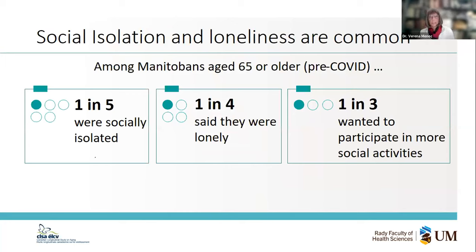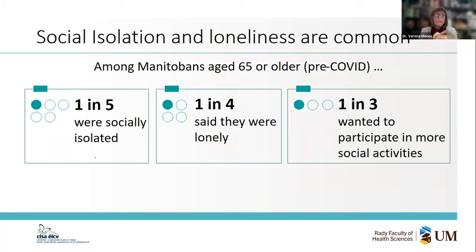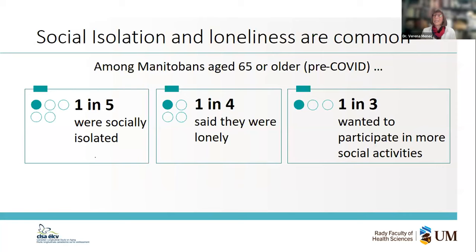Let me give you a flavor of some of the things that are important for our partners — for example, knowing how common social isolation and loneliness are in Manitoba. These numbers won't be very different in other provinces, but having Manitoba-specific figures is particularly important for our partners. About 20% of Manitobans aged 65 and over are socially isolated, about 25% say they are lonely — and this is pre-COVID. About one in three, roughly 30%, want to participate in more social activities, which suggests people do want to be more socially engaged. There's an opportunity there if we could only get them connected.